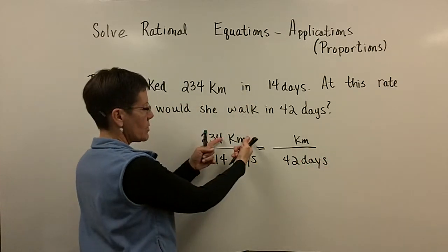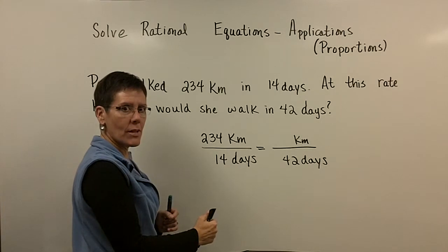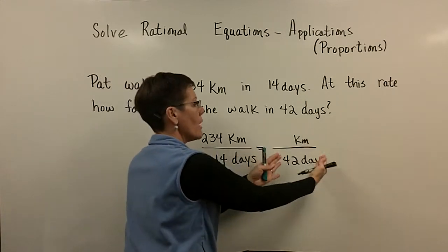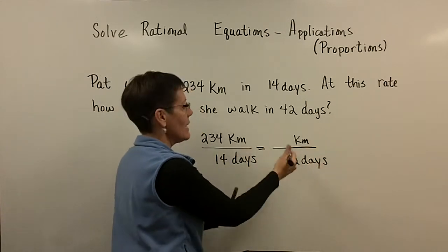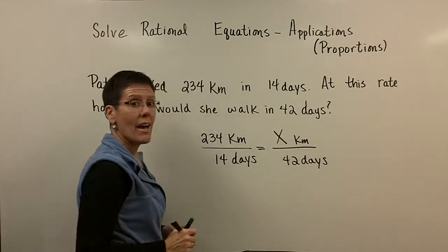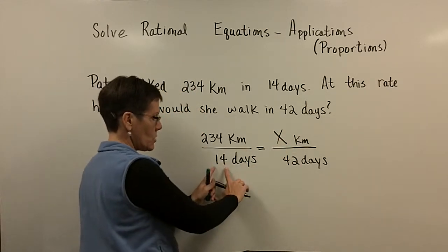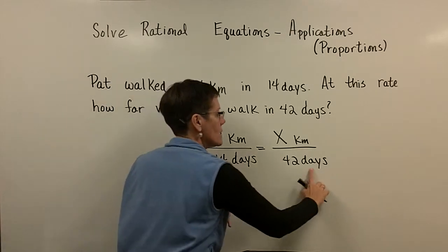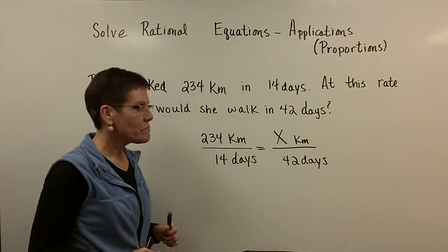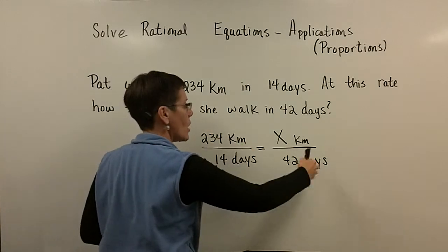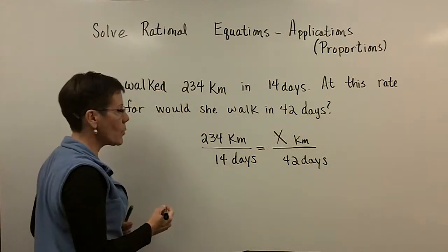So you see how I put kilometers here in the numerator and days in the denominator there? Then with my other piece of data and the thing I'm looking to find which is x, how many kilometers in 42 days, I just have to be sure that if days is in the denominator, days is in the denominator here.